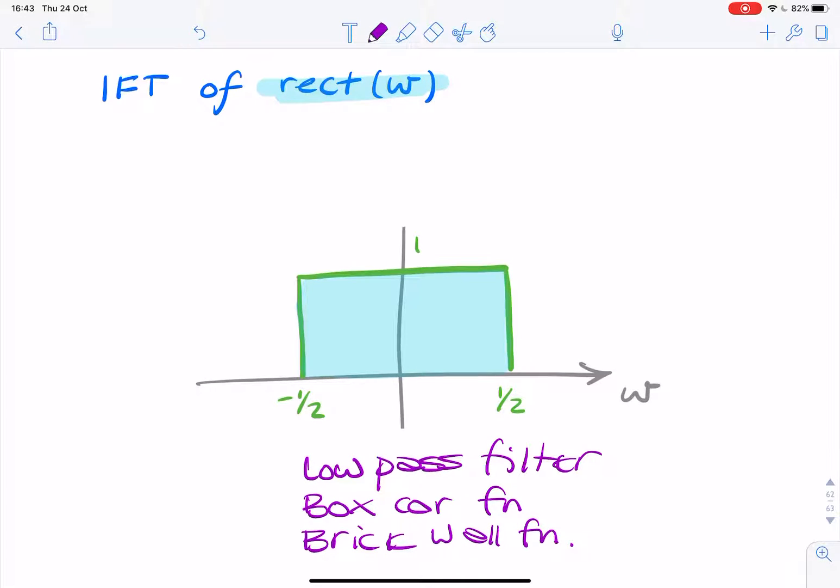So basically, it's constant between two values, minus half and plus half, if we're using omega without dividing. And we want to know what the inverse Fourier transform is.